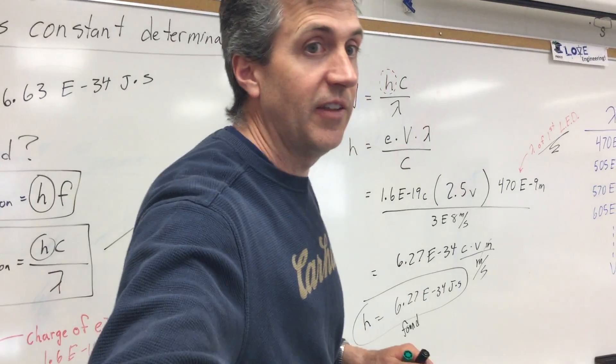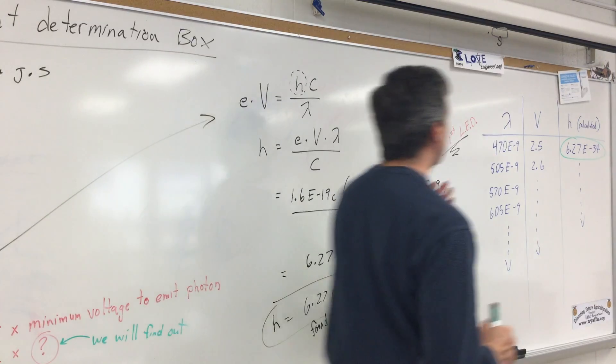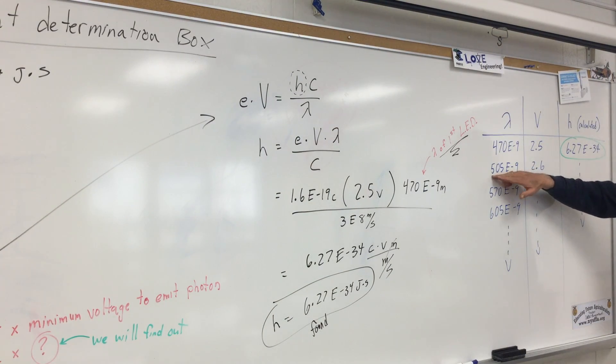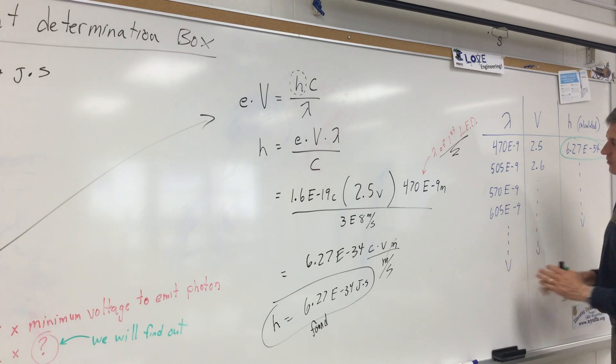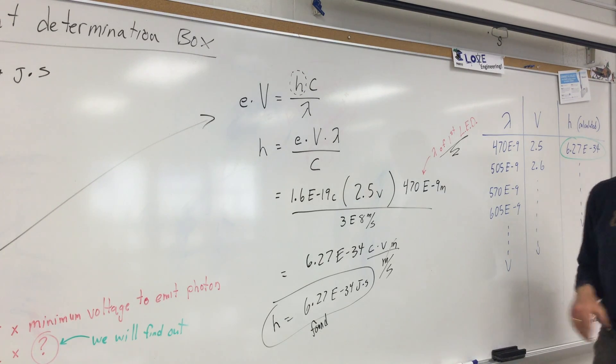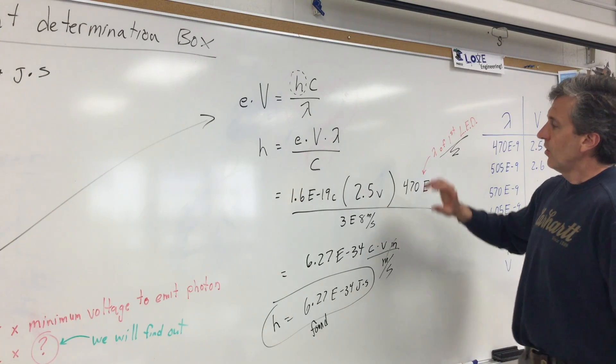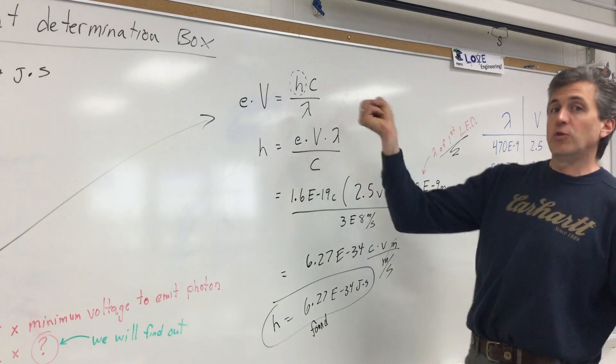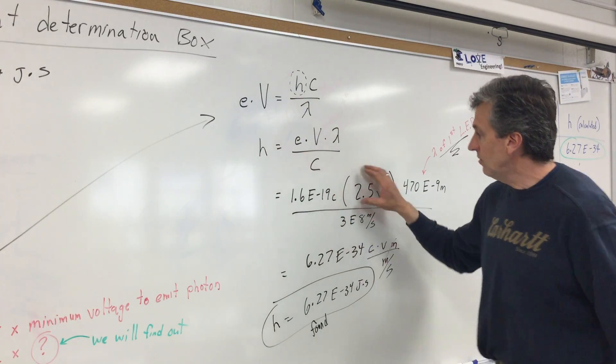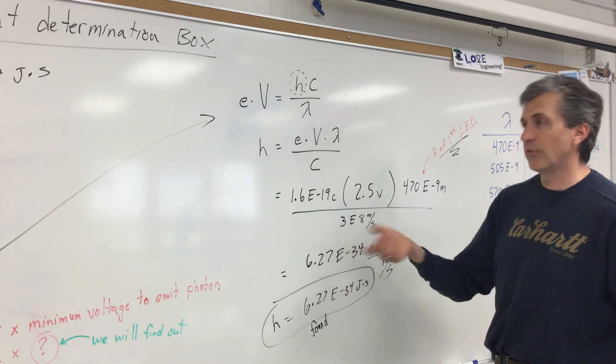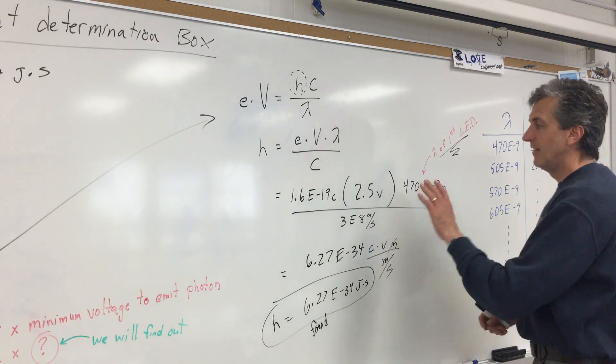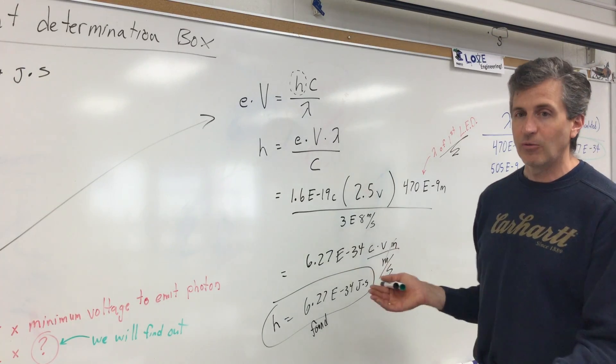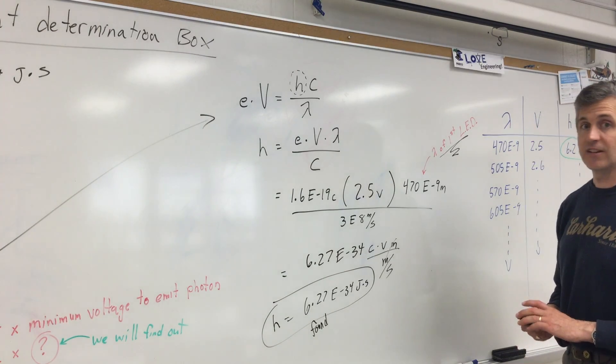So what we have ended up finding here is we have determined Planck's constant. And we could continue this by testing the next LED, which was 505 nanometers. And I did test it, it was 2.6. And then we could do the math, which I didn't do. We could do the next one, the next one, the next one, and we could average them all or whatever. But basically what we're doing is, just to summarize here, we're seeing what voltage will cause a photon light to be emitted. And when we do that, we can then calculate Planck's constant. We're almost like working backwards, because we always take Planck's constant for granted and just like, oh yeah, just plug it in and it works. This is backing up and saying, here's why it works and here's how it works. And we can actually physically test and come up with that number.